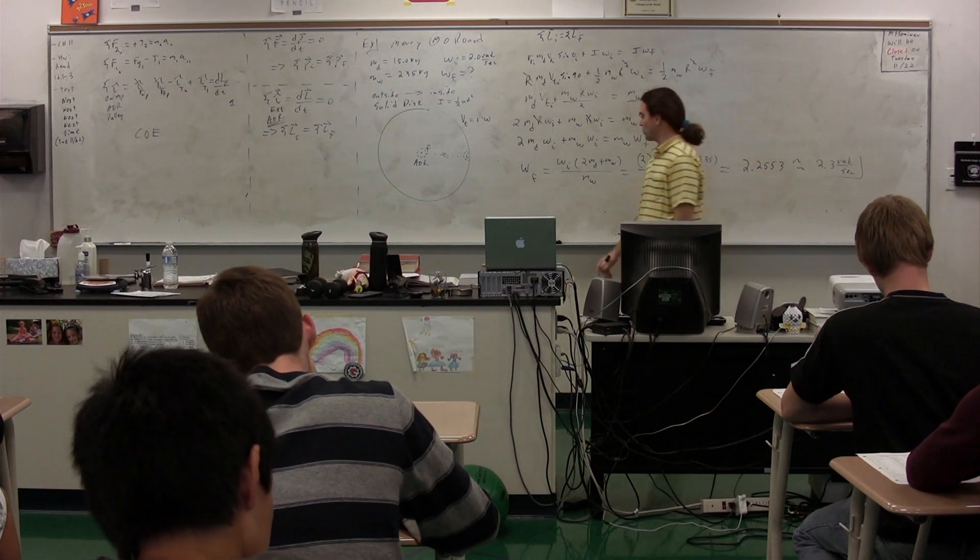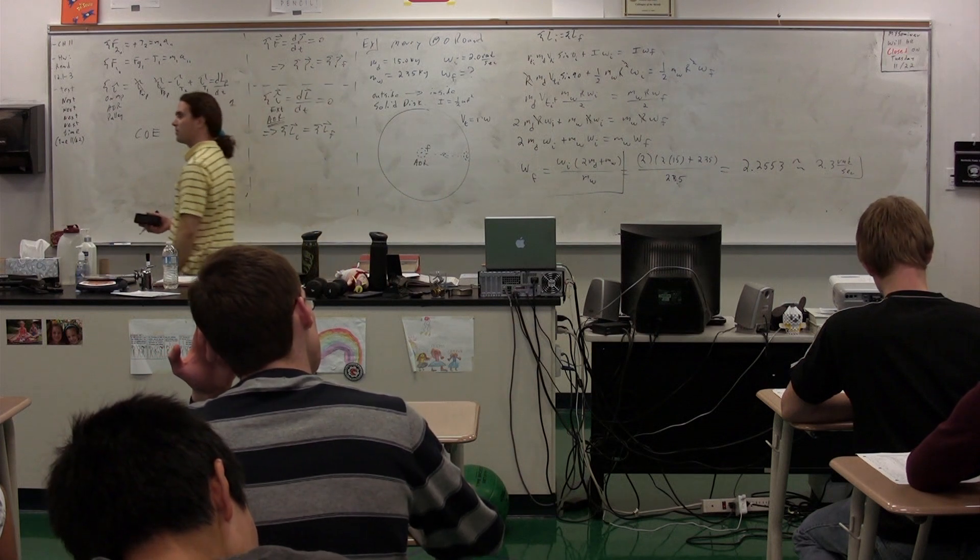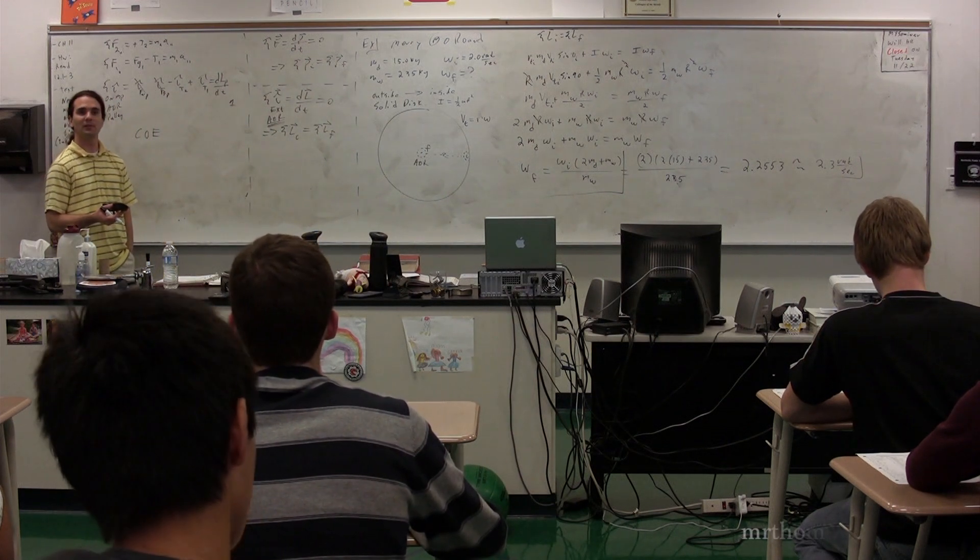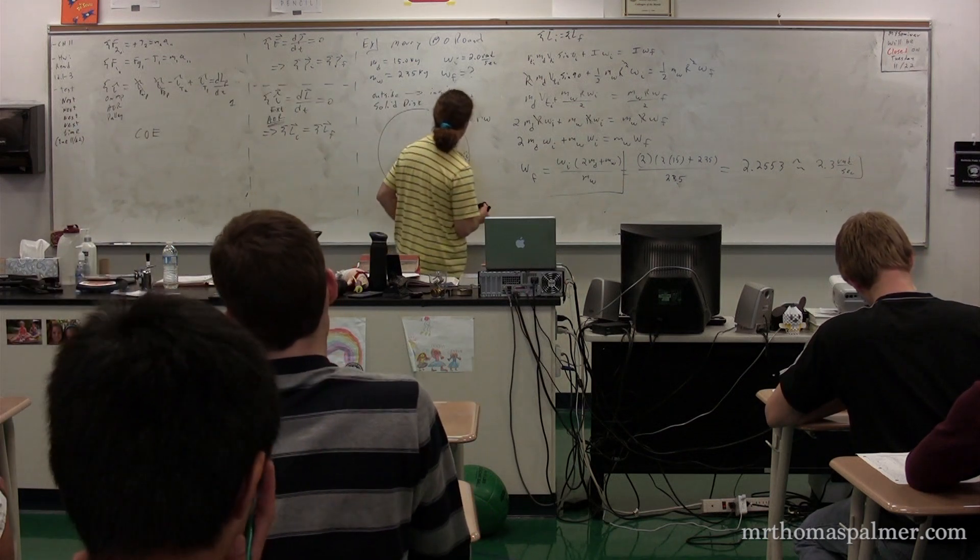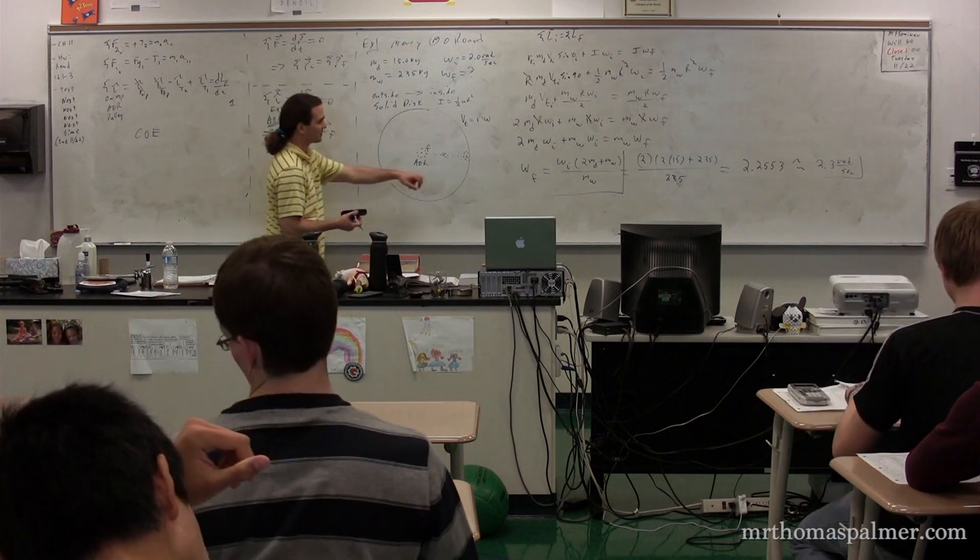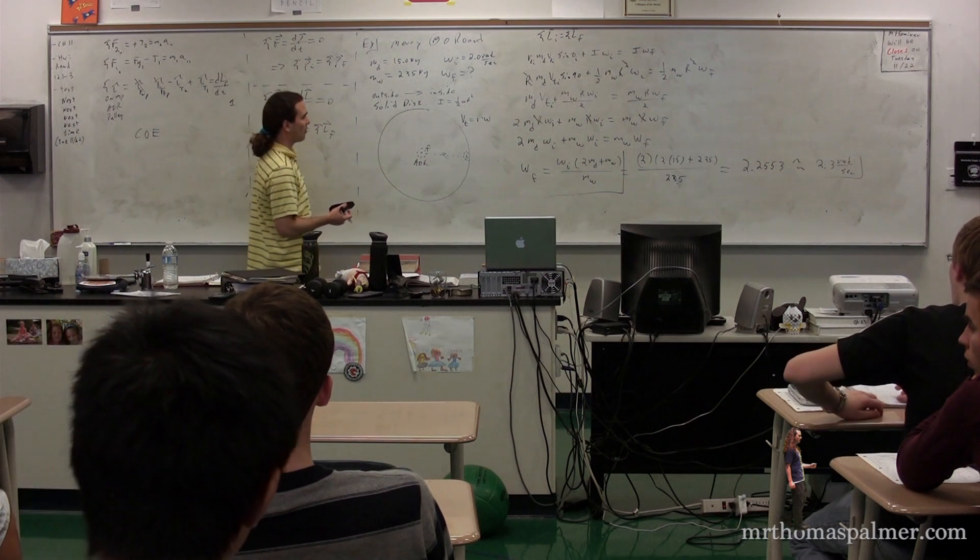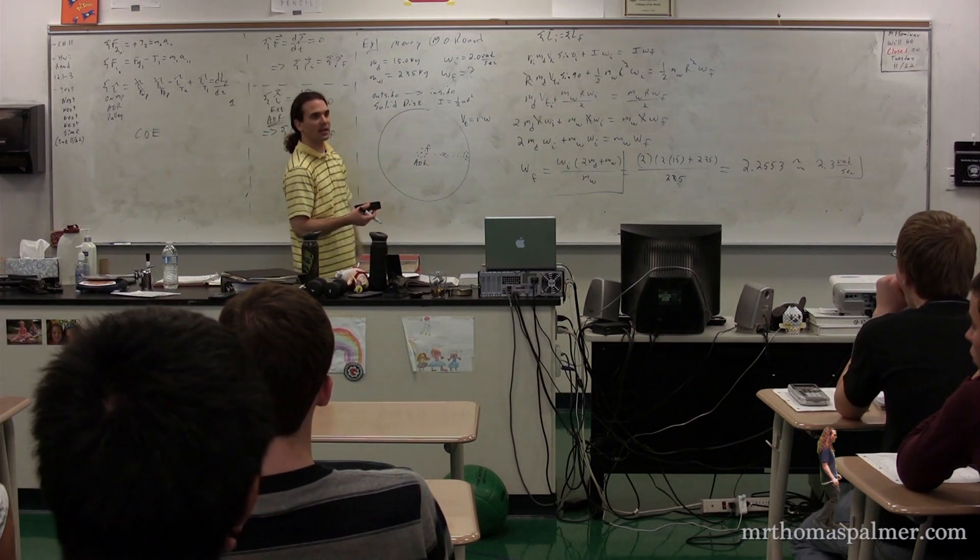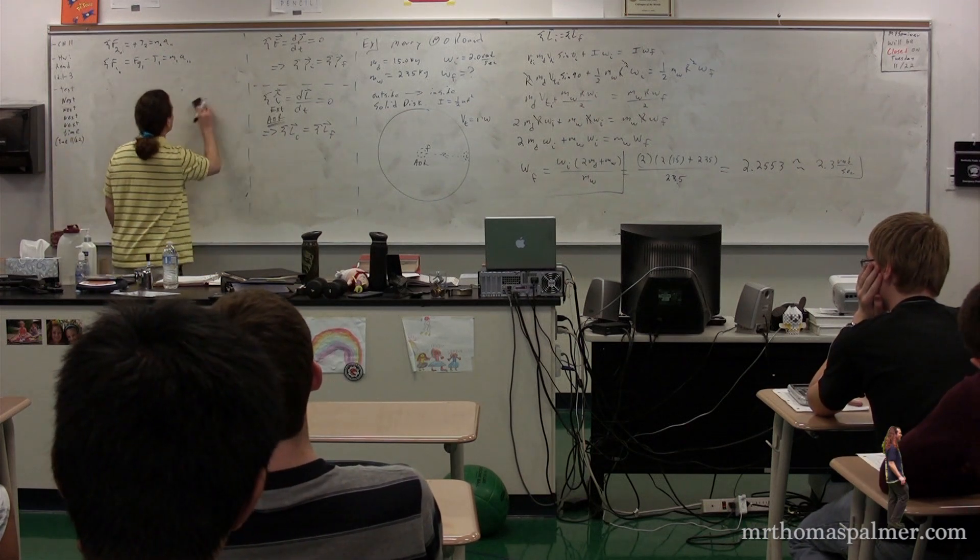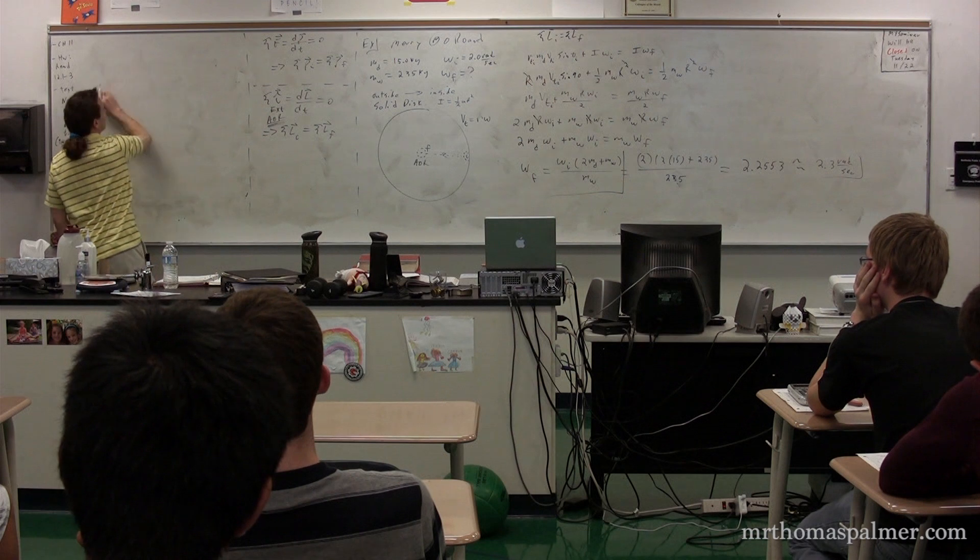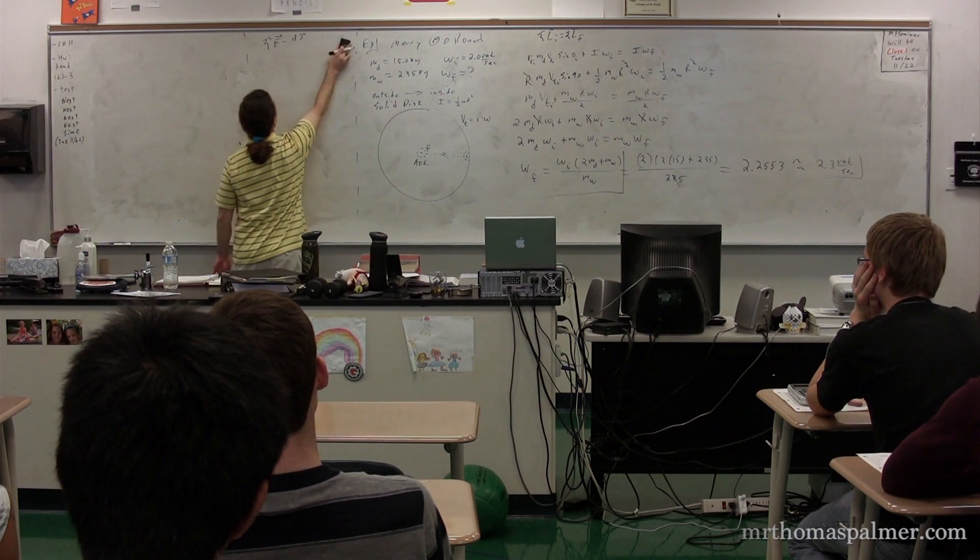An interesting thing to note about our answer. Does the radius of the merry-go-round matter? No. Notice it didn't matter at all. It ends up canceling out completely. As long as she goes from the outside, it doesn't matter, because regardless of whether she goes from here to the middle, her final point would be in terms of the radius anyway. So no matter where she moves, that radius will always end up canceling out. So just an interesting point that it only matters the fraction of how far she moves from the outside to the inside. It doesn't matter the actual distance.